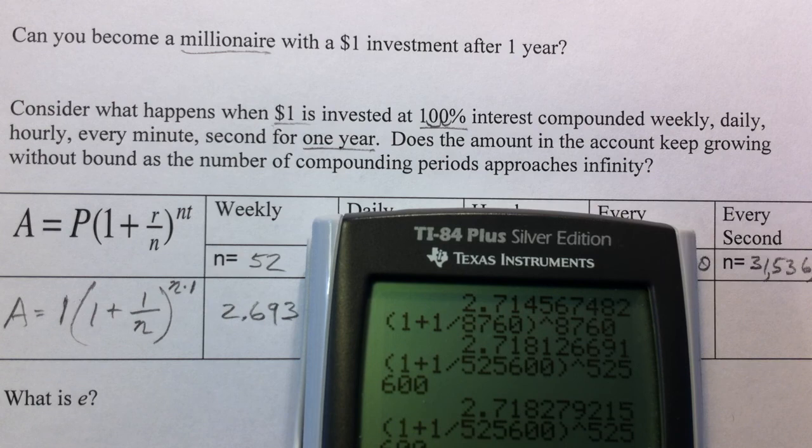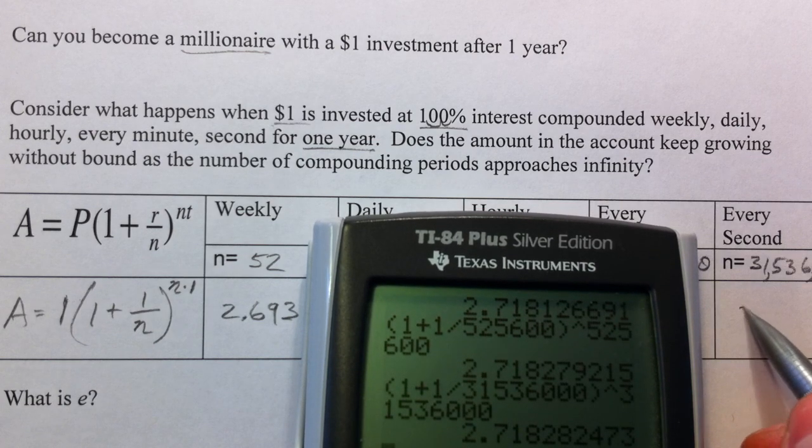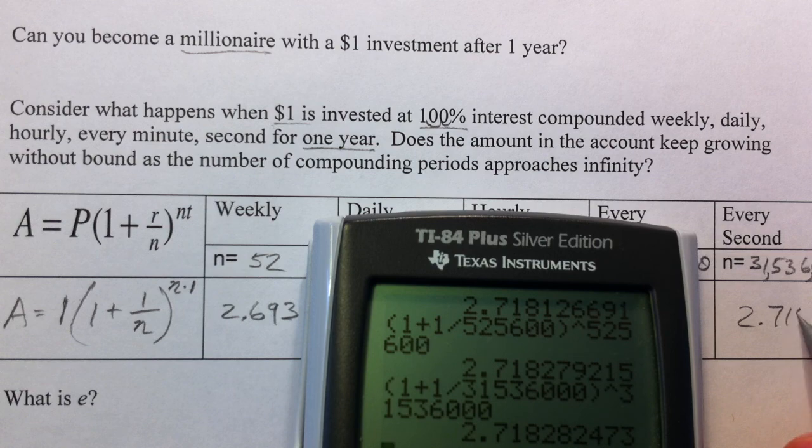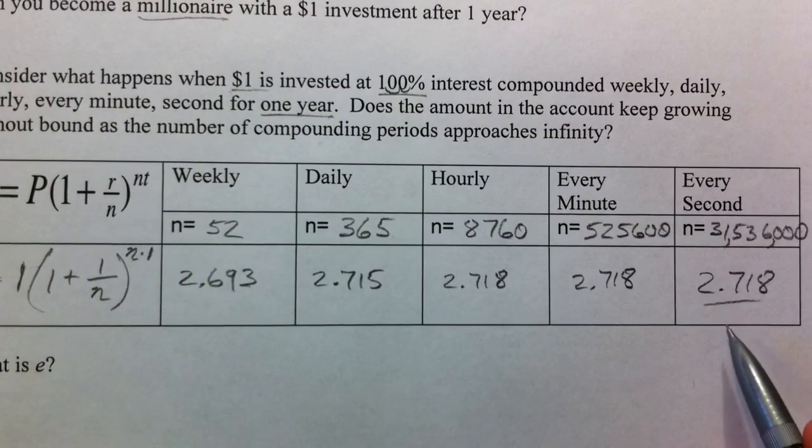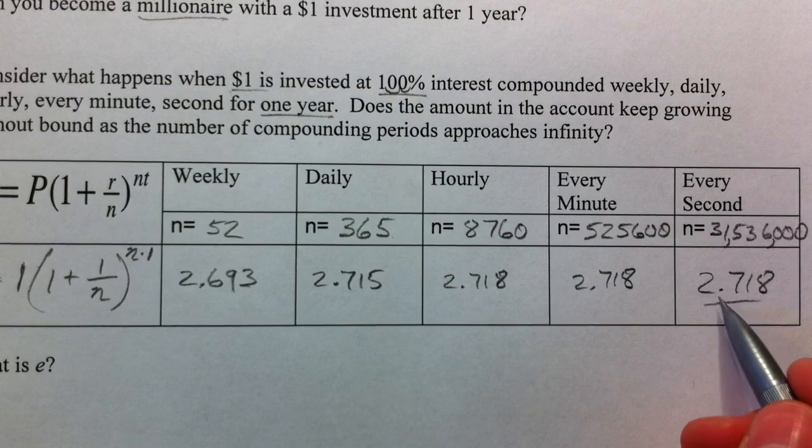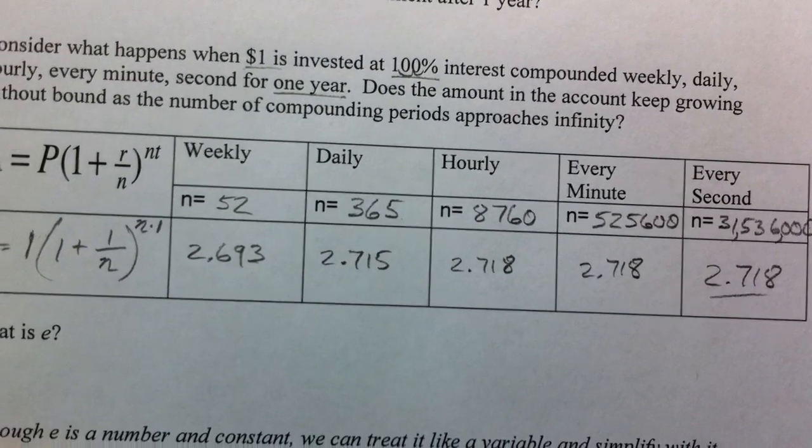We're not going to be able to go higher. 31,536,000. And so this 2.718 is sort of what it's approaching. You're never going to be able to make more than $2.72 if the bank rounds up for you, which they do.